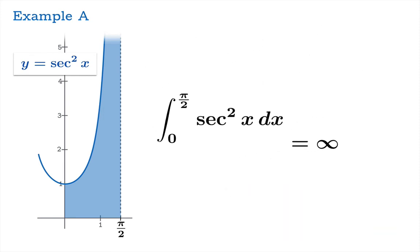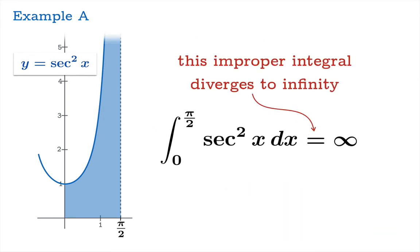So this improper integral diverges to infinity and our interpretation is that this is an infinite area that we're looking at.